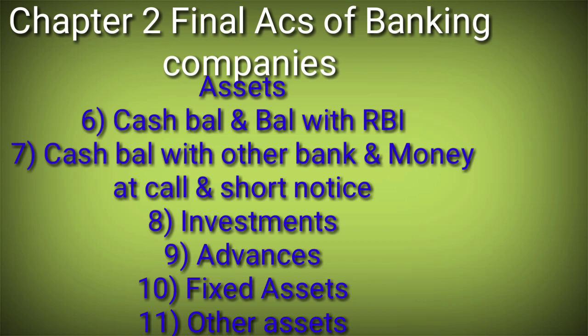Now the assets side, Schedules 6 to 11. Schedule 6 is Cash Balance and Balance with RBI - here you write cash in hand, cash at bank, and balance with RBI. Schedule 7 is Cash Balance with Other Banks and Money at Call and Short Notice - here you write balances with SBI and other different banks, and Money at Call and Short Notice directly by name.